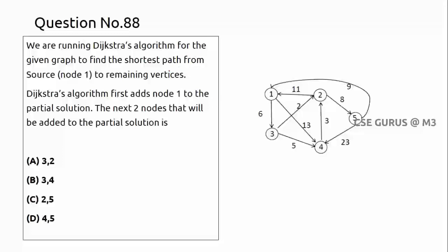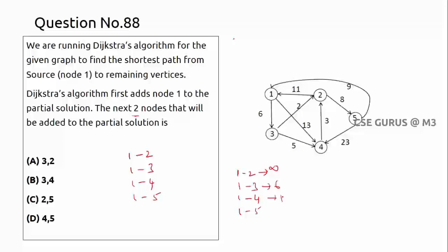Coming to question number 88, we are running Dijkstra's algorithm for the given graph to find the shortest path from source node 1. Dijkstra's finds the shortest path from one vertex to every remaining vertex. The source vertex is 1. Note the directions — there is no direct path from 1 to 2. Direct distances: 1-2 is infinity, 1-3 is 6, 1-4 is 13, 1-5 is infinity.